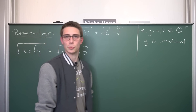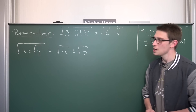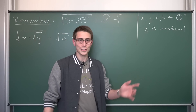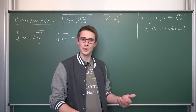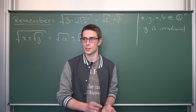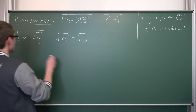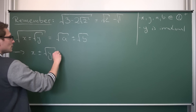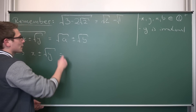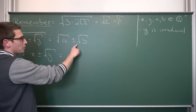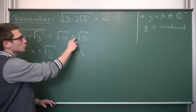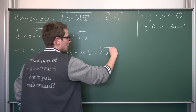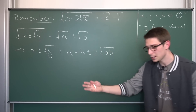Now we can get started with the actual denesting using those assumptions. The first step is to square both sides — we are going to play a little bit of field extension theory here, which basically goes into the field of Galois theory if you are more involved with abstract algebra. This is a very cool topic that Ramanujan dealt a lot with. By squaring both sides, the square root squared is just the argument itself, so x plus or minus the square root of y equals this expression squared. By the binomial theorem we get a, plus b, plus or minus 2 times the square root of a times b.